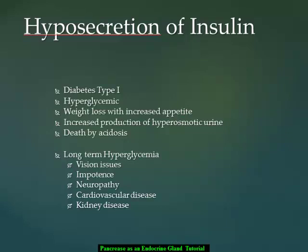We also see increased production of hyperosmotic urine. The extra glucose is lost through the kidneys — not because it simply spills over, but because there are a finite number of receptors to reabsorb glucose from the urine. Once all those receptors are maximized, no more glucose can be taken back in. More glucose in the blood means more glucose in the urine, which changes osmotic gradients and causes more water to be lost. A person with chronic hyposecretion of insulin will eventually die, potentially from acidosis, unless treated.